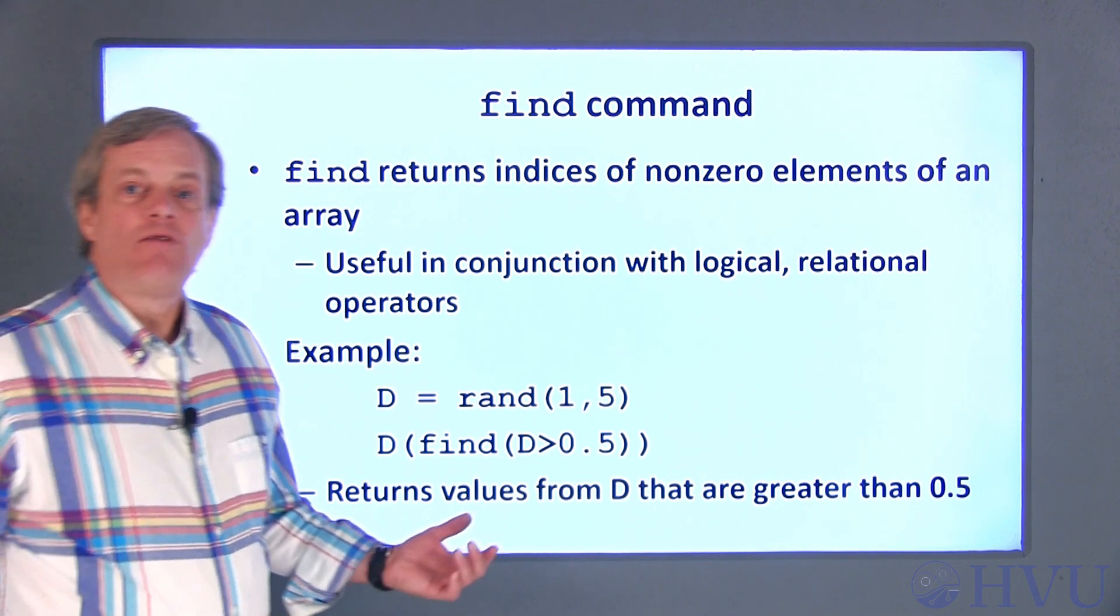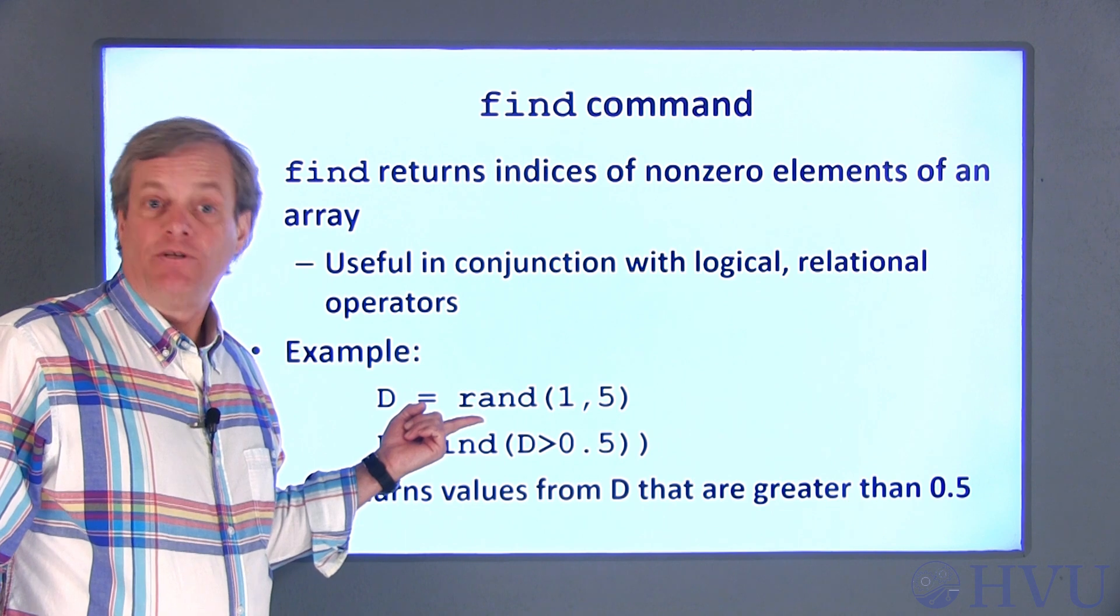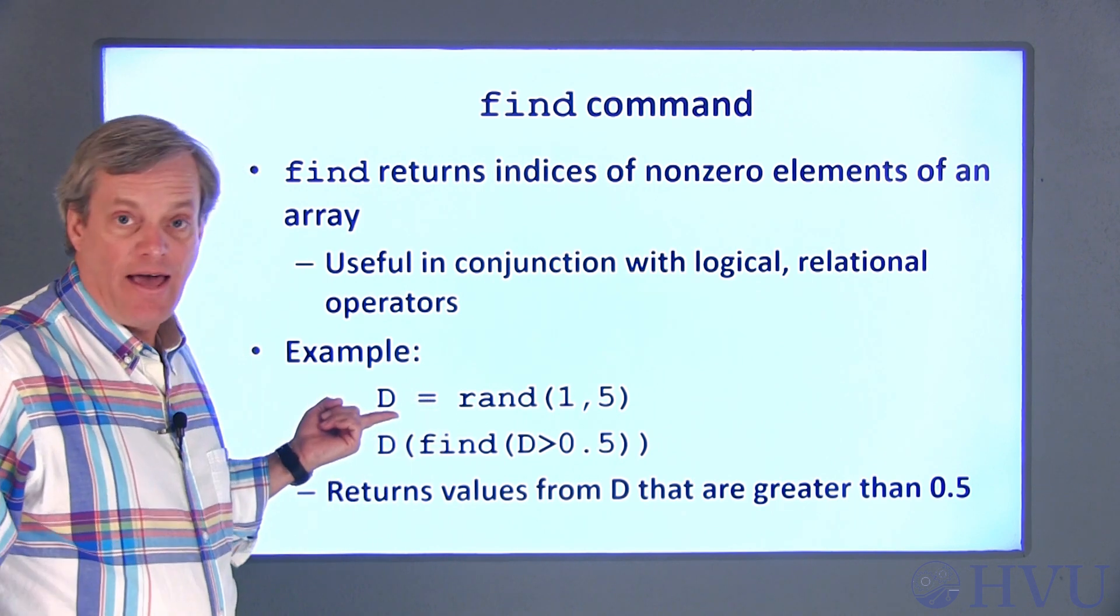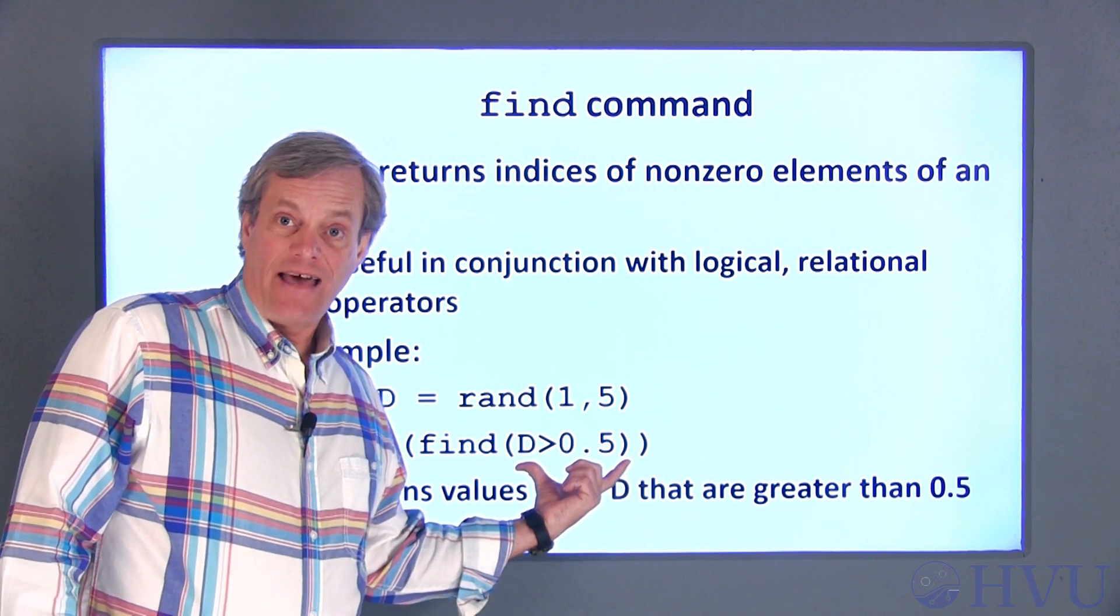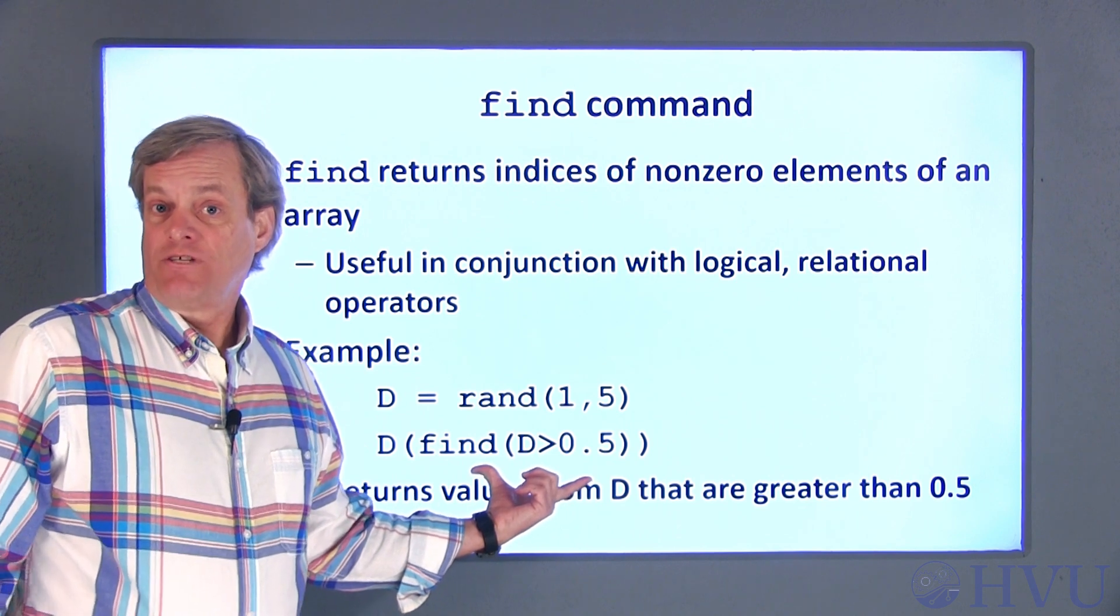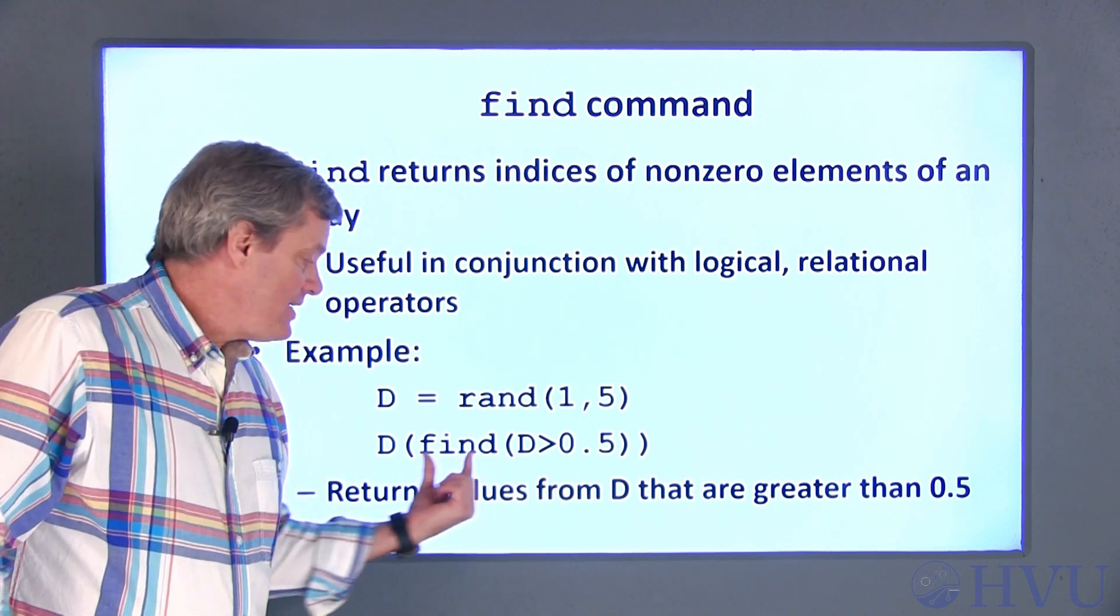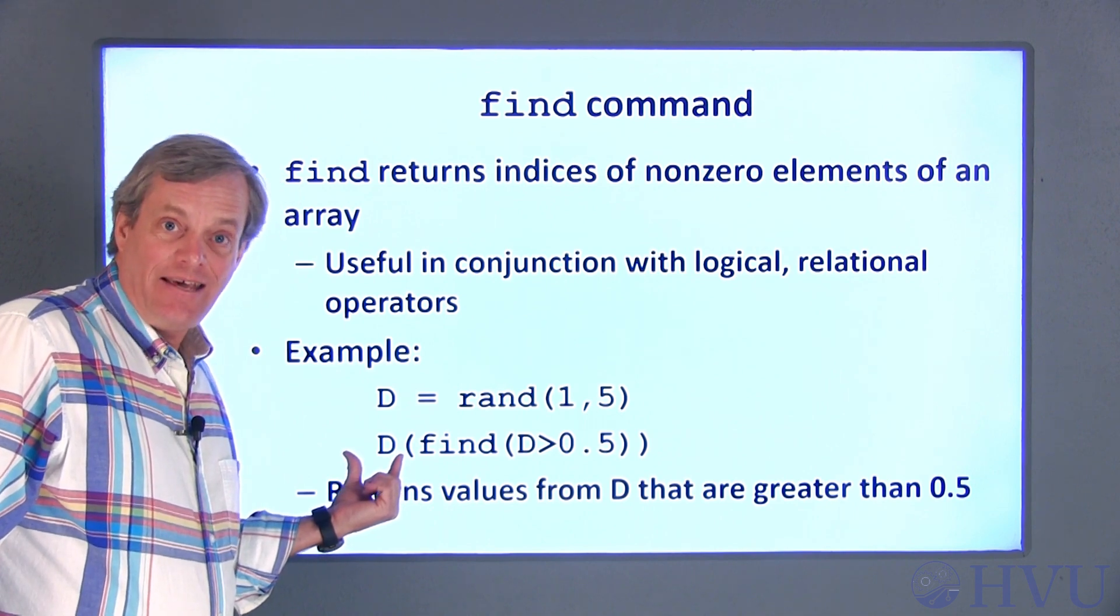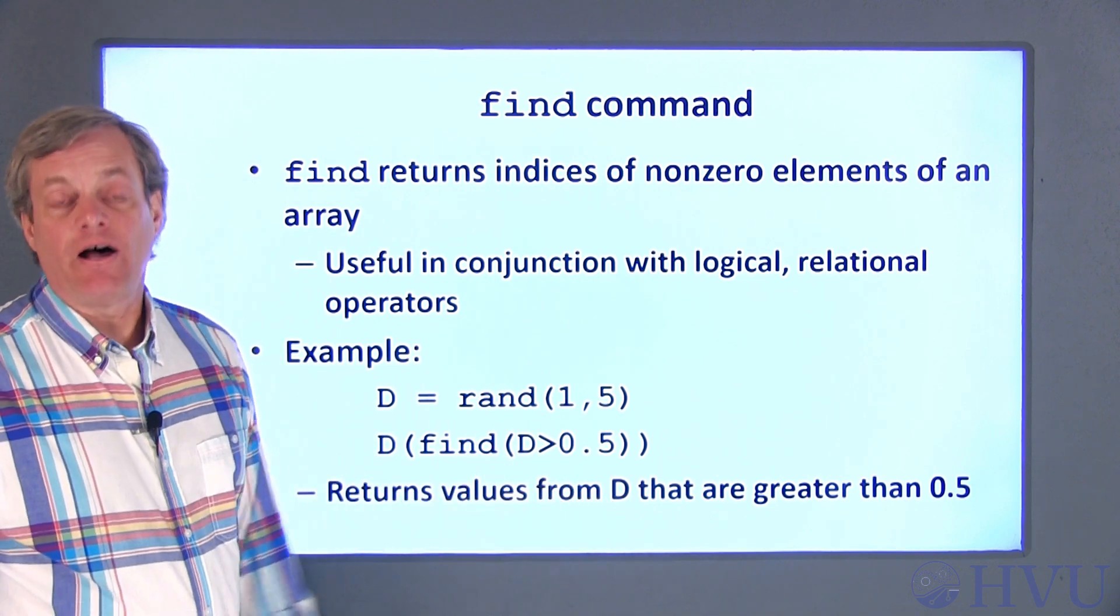As an example of this, I can create a row vector of 5 uniformly distributed random numbers between 0 and 1 with this command. This command finds the values in that array that are larger than 0.5. The find command returns indices where this condition is true, and using those indices as an argument to d extracts the values that are true or returns the values that are greater than 0.5.